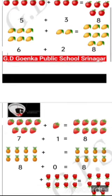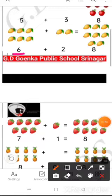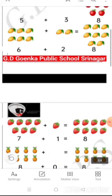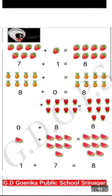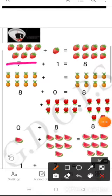Then next we have 6 mangoes and 2 mangoes. So 6 and 2 makes 8. Let's move forward. Now we have 7 strawberries and 1 strawberry. 7 and 1 makes 8.